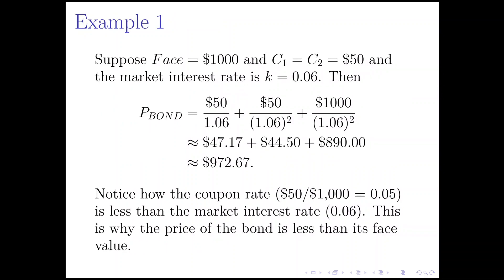Let's look at an example to illustrate calculating the price of a bond. Suppose the face value is $1,000 — that's how much the bond pays back at the very end, usually the same as what was paid when initially issued. The coupon payments are all equal at $50, and the market interest rate is 6%, so K equals 0.06. Discounting the two coupon payments and the face value at 6%, the price of the bond works out to $972.67.